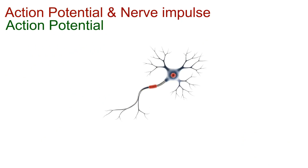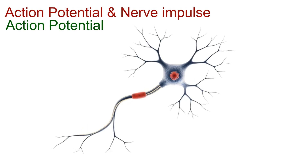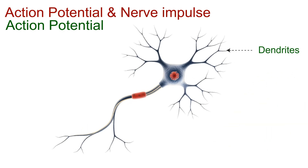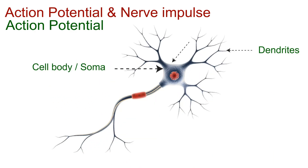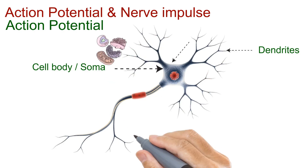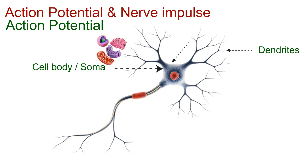To understand action potential, let's start with the structure of a neuron. First come the dendrites, branching processes that receive incoming signals. These feed into the cell body, or soma, which contains the nucleus and other organelles that keep the cell alive. From the cell body extends a long, thread-like projection called the axon.